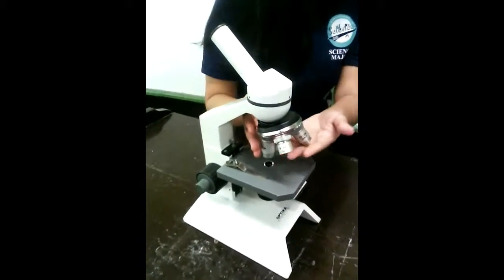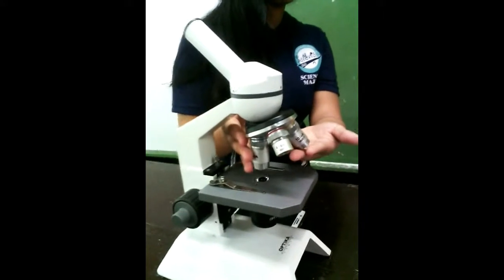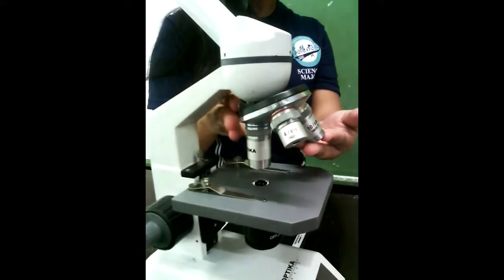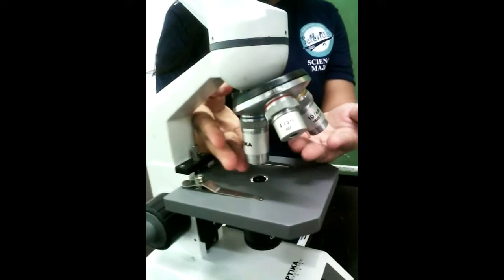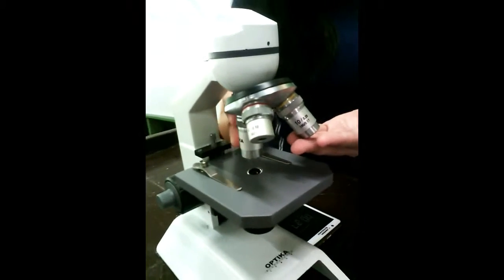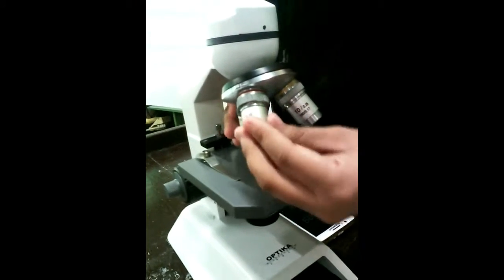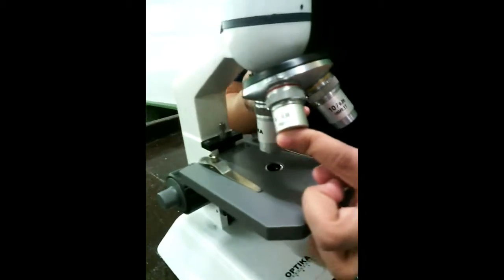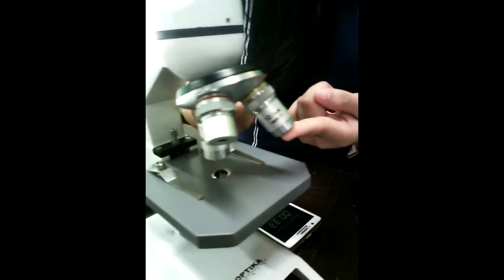The objectives. Usually an ordinary laboratory microscope has two or three objectives attached to the revolving nose piece. These are the scanner, the low power objectives, and the high power objectives.